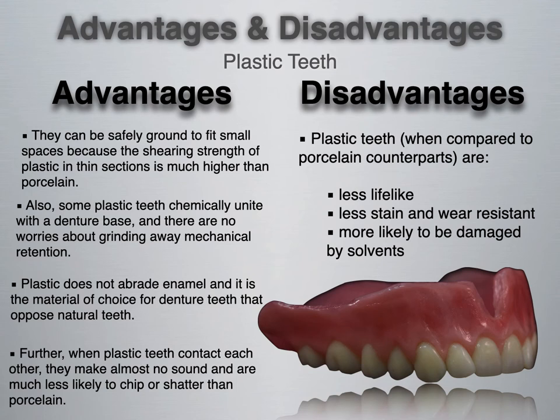The disadvantages of plastic teeth compared to porcelain: they are less lifelike — however, in today's dental technology industry, denture teeth in composites and PMMA have come a long way, so this is not necessarily true unless we're talking about a very cheap plastic tooth. The real problem is that plastic teeth have less stain and wear resistance. Being more porous, they stain easier, wear faster, and are more likely to be damaged by solvents.